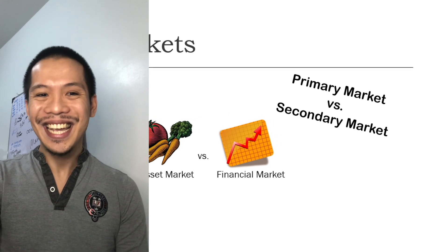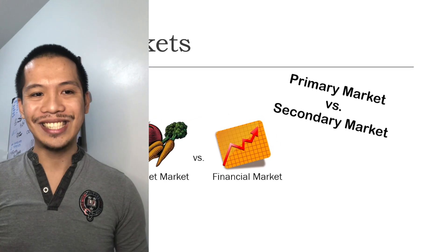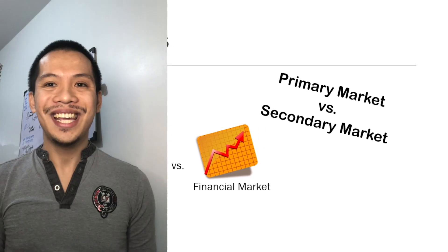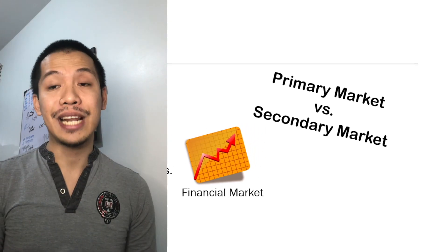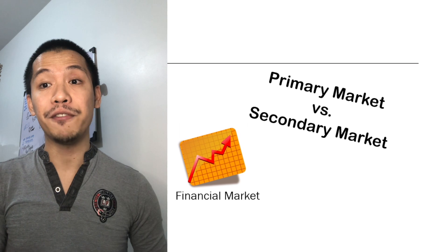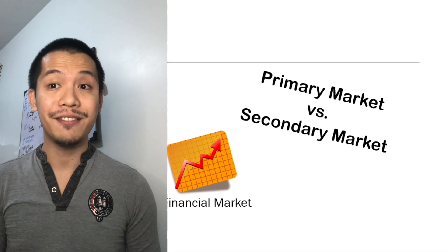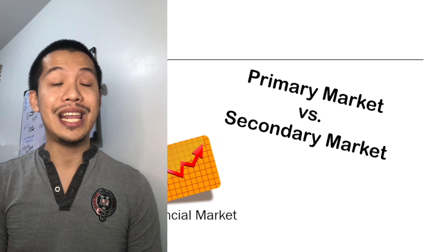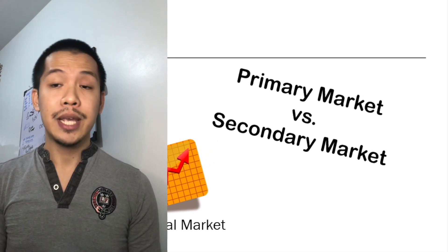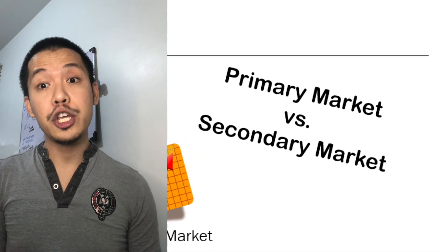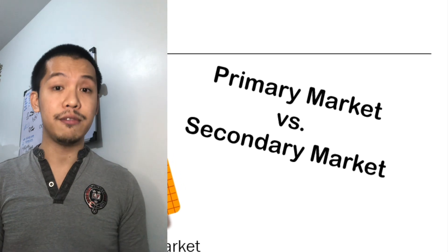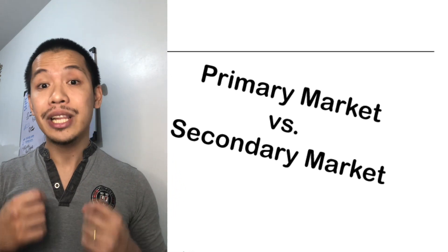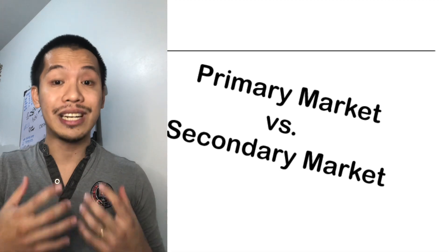Primary markets are where newly issued securities are sold by companies who need to raise capital. In other words, the seller is the issuer of the securities. Meanwhile, in the secondary market, transactions involved are between one investor and another, like one trader selling a stock to another. Here in the secondary market, the issuing company is no longer involved in the transaction — it is merely a transaction between two investors.